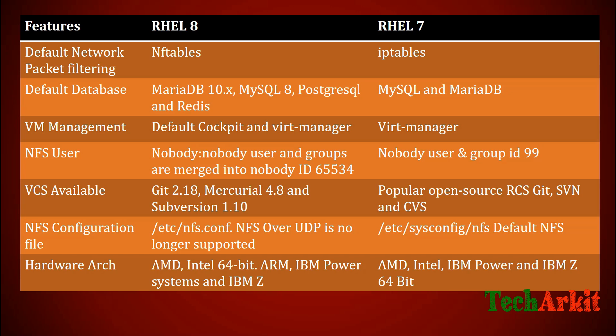For default databases, RHEL 8 is improved with MariaDB 10, MySQL, PostgreSQL, and RADIUS. In RHEL 7, MySQL and MariaDB were the only options available, and those were not the latest versions — they were one or two versions behind.